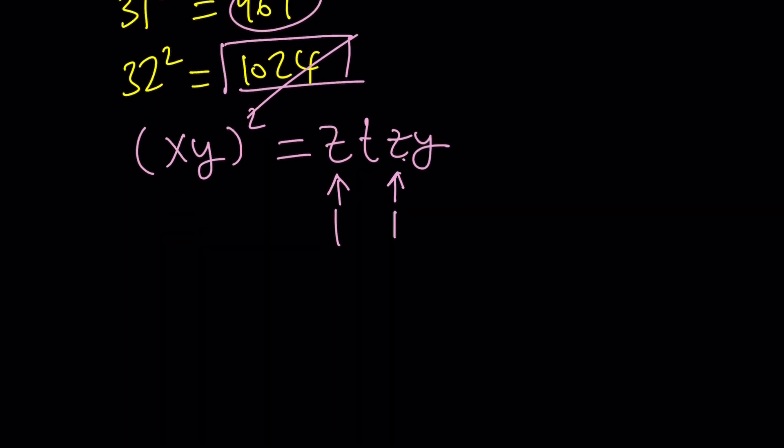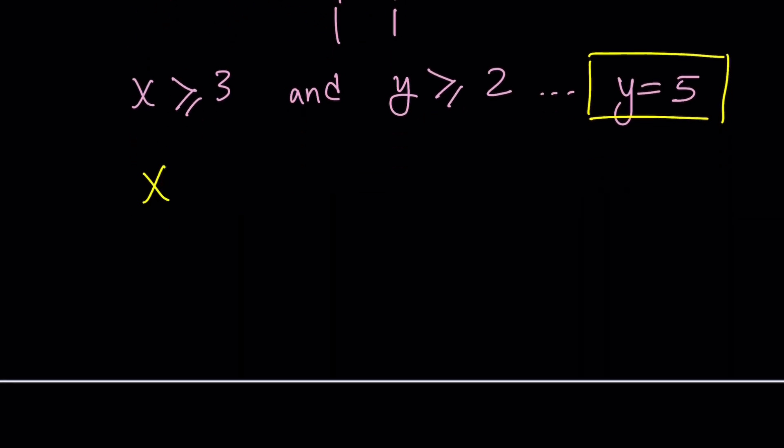So here's what we know, what we can get from here. x is greater than or equal to 3, and y is greater than or equal to 2. Because 32 is the smallest number that satisfies this, but it's not a solution. So y equals 5 is a must. Because we only had three choices, 0, 1, and 5. The only one that satisfies is y equals 5. Great. So now we found y.